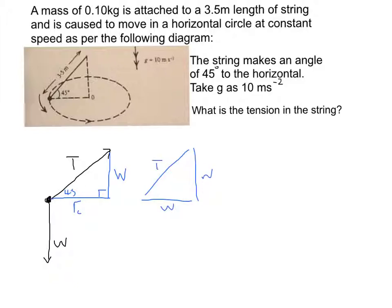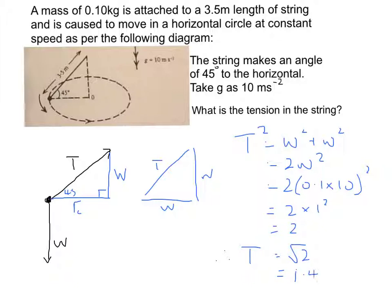So our Pythagoras rule, T squared equals 2 weight squared. And from the information we have, weight was equal to 0.1 by 10. So that's 2 by 1 squared, which is just 2. Then square rooting both sides, T therefore will be equal to the square root of 2, which is equal to 1.4 Newtons. So that's an alternative way for you to work out the tension in the string.